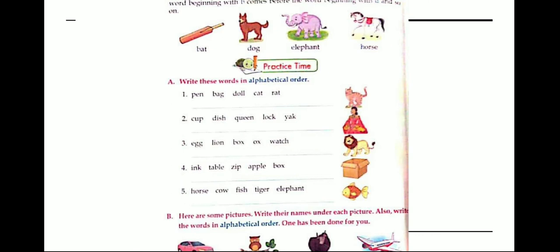The word beginning with B comes before the word beginning with D, and the word beginning with E comes before the word beginning with H. So we can arrange these words as bat, dog, elephant and horse.